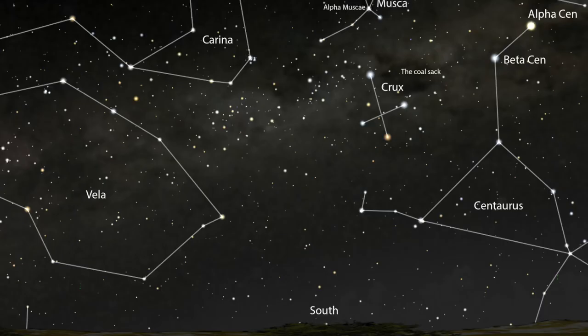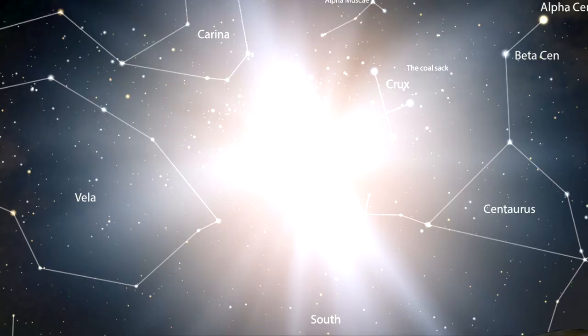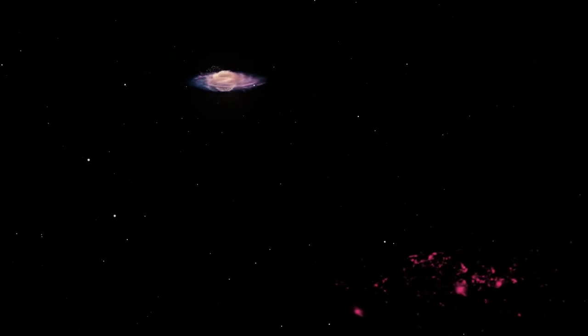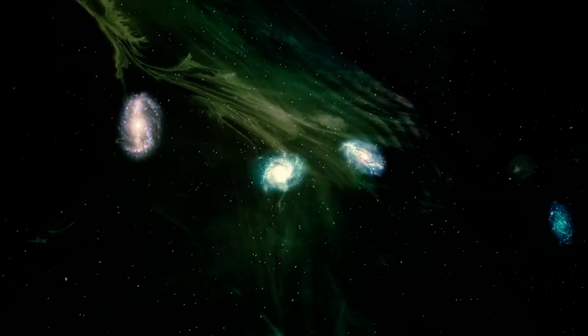Number 5: Dark flow is moving galaxies. There's something sitting in the patch of sky between the constellations Vela and Centaurus. First detected by researchers at NASA's Goddard Space Flight Center, a group of galaxy clusters were moving towards this area in space at incredible speeds.